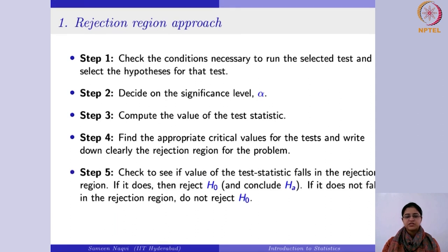Finally, you will see if the test statistic falls in the rejection region — you would reject the null hypothesis. And if it does not fall in the rejection region, you would fail to reject the null hypothesis. These are the common steps adopted in the rejection region approach.